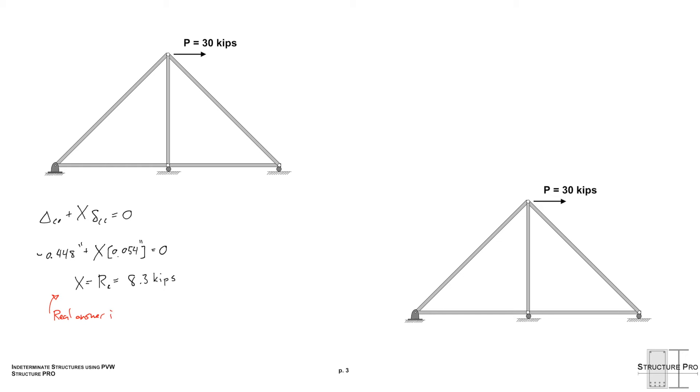So we can see that the real answer x or the real answer of the whole structure is the superposition of the released real system plus x times the released redundant system. So we could actually find all our member forces just doing the real member forces that we solve for in the release system and then adding x times the member forces in our released redundant system. And we can do the same for reactions. So I've done that here. As usual feel free to check my work and put errors in the comments below.